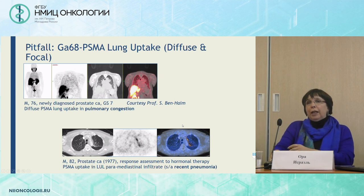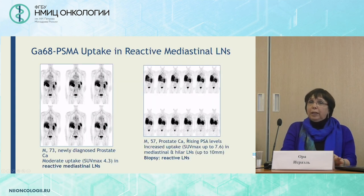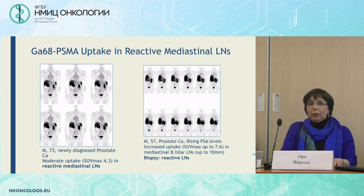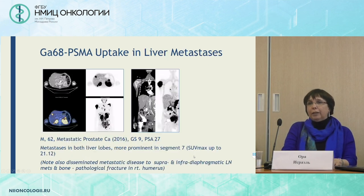There can also be diffuse lung uptake, as seen in these examples — in one patient it was pulmonary congestion, and in another patient it was recent pneumonia. Regarding uptake in the mediastinum: when the uptake is of moderate intensity, you can report it as reactive nodes. But sometimes when the uptake is higher, we should know our limits and refer to tissue biopsy before making the diagnosis of reactive lymph nodes.